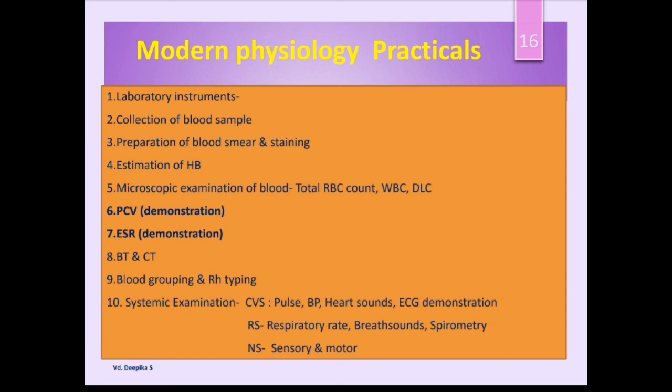After lab practicals, we have another group called systemic examination — including examination of pulse, BP, and heart sounds. Under the respiratory system, we cover examination of respiration, breath sounds, and spirometry. Under the nervous system, examination of sensory and motor systems will be covered. Another important examination is urine examination — including specific gravity of urine and blood in urine. Under modern physiology, we have three sections: blood examination, urine examination, and systemic examination.